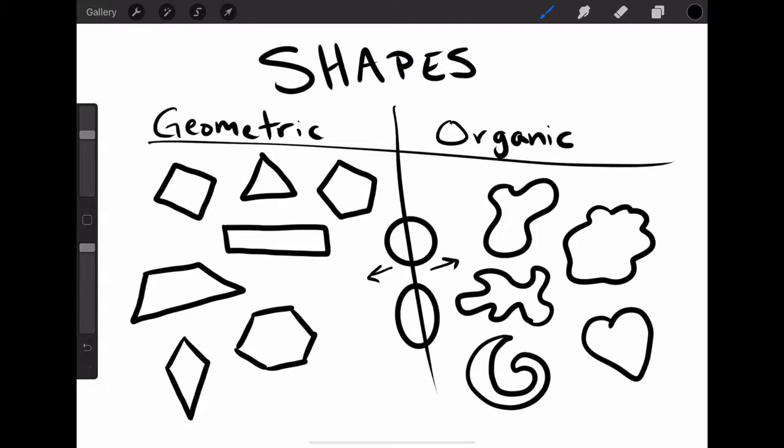Organic shapes tend to be more free, more loose, more calm and mellow, whereas geometric shapes are a lot more rigid and structured. We use them for different purposes. So today's little lesson is all about trying out your creativity and seeing what sort of objects you can come up with using geometric and organic shapes.